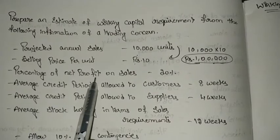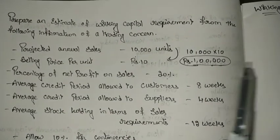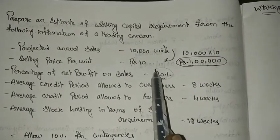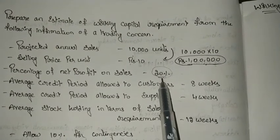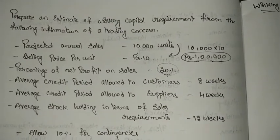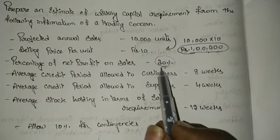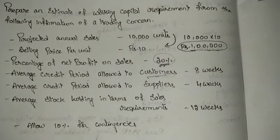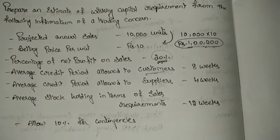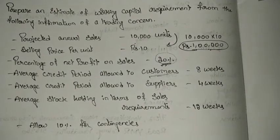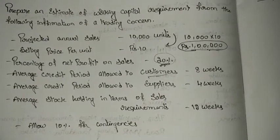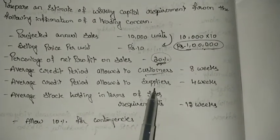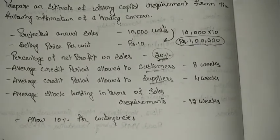They are giving percentage of net profit on sales as 20%. So out of 1 lakh total sales, 20% — that is 20,000 — is the net profit, and the remaining 80% is used for other purposes. The average credit period allowed to customers is 8 weeks. Customers are the debtors to the business organization; when we provide credit sales, customers become debtors and pay after some time period.